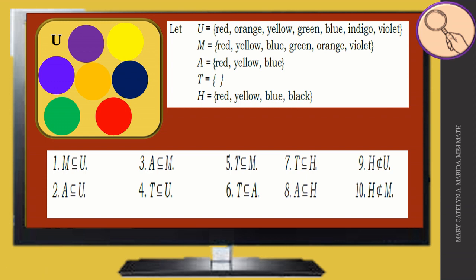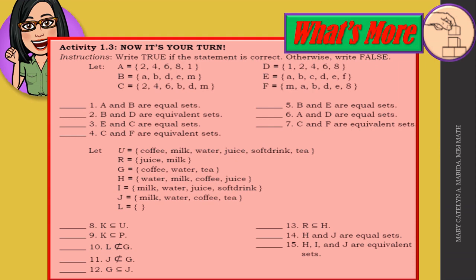You are getting good at it! Now it's your turn. Instructions: Write true if the statement is correct, otherwise write false. Let sets A, B, C, D, E, and F be considered in answering numbers 1 through 7. Let sets U, R, G, H, I, J, and L be considered in answering numbers 8 through 15. Replay this video as needed to answer activity 1.3, and please submit your work on time.